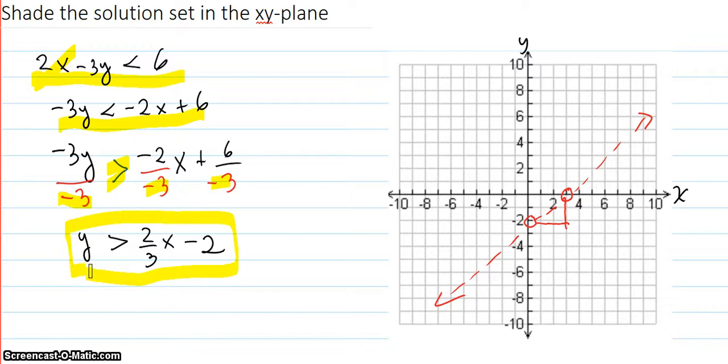Then you graph that over here. So you have your y-intercept and your slope. The y-intercept is 0 negative 2. But we're going to graph it with an open circle because the solution set is all the points where the y coordinates are greater than the ones that are on the line y equals.